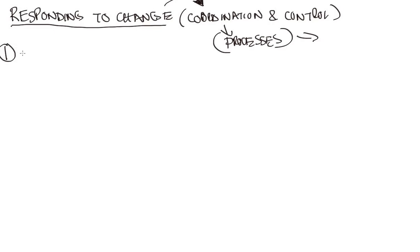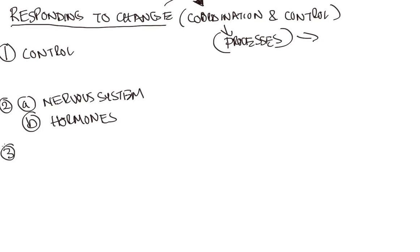So there are three things I'll look at. The first one is control. The second part would be the difference between the nervous system and the hormonal system—or the endocrine system which is responsible for hormones. Then, of course, we want to look at the response.